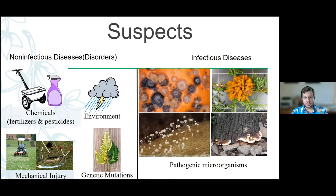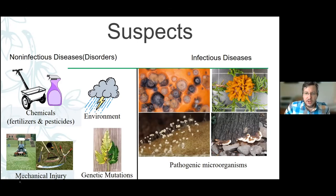Compared to infectious diseases, these are going to be caused by pathogens, they're going to progress over time, and importantly, they're going to be able to spread from plant to plant. You're not going to have freeze damage spreading from one plant to another — once that freeze event is over, the damage is done — compared to a disease that might progress from year to year, every single year from plant to plant.